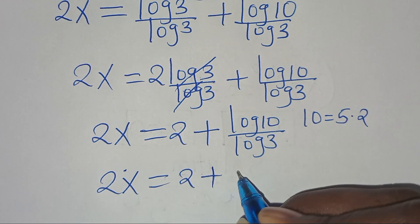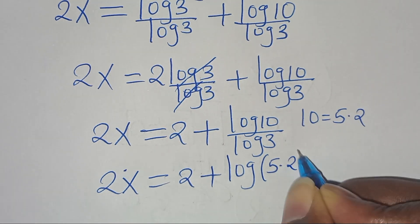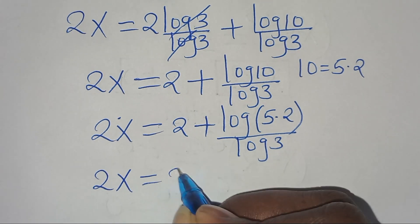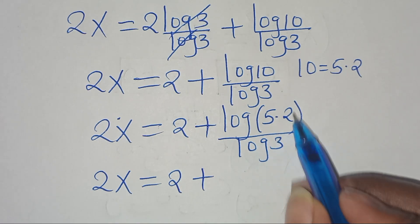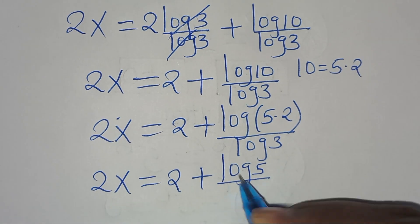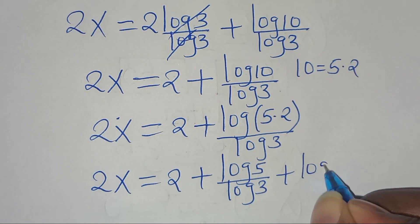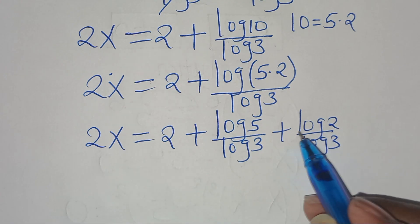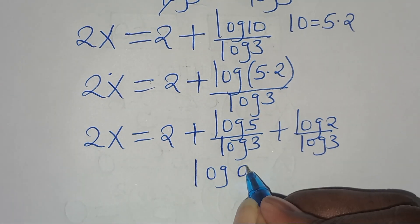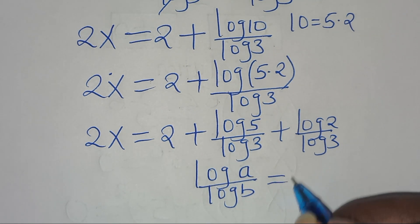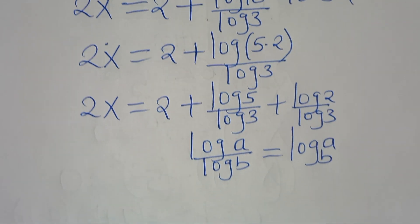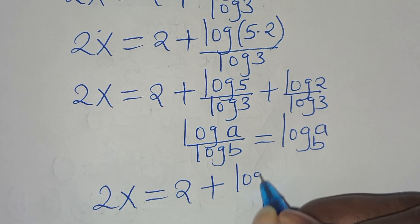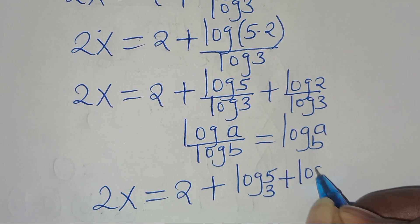We can express 10 as 5 times 2, so 2x equals 2 plus log(5 × 2) divided by log 3, which gives log 5 divided by log 3 plus log 2 divided by log 3. Now log a divided by log b is in the form of log a to base b. Applying this change-of-base property, 2x equals 2 plus log base 3 of 5 plus log base 3 of 2.